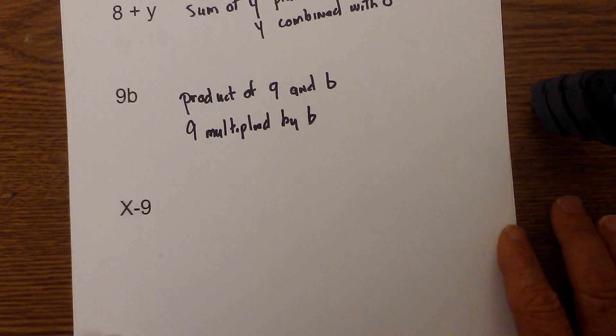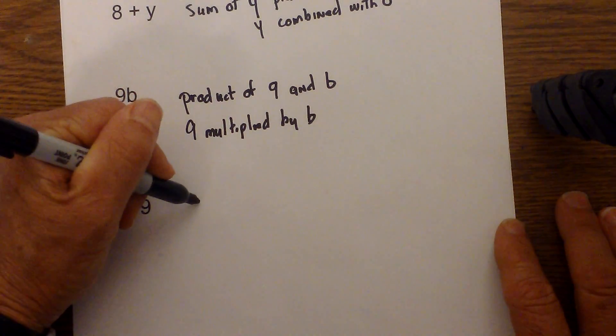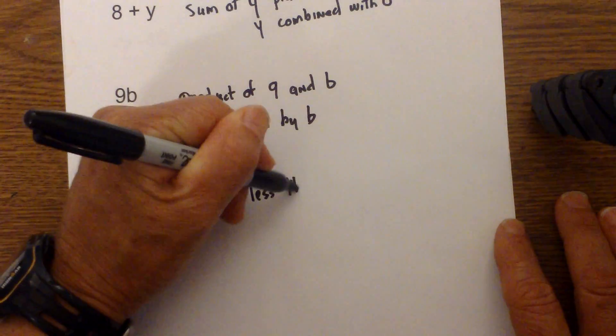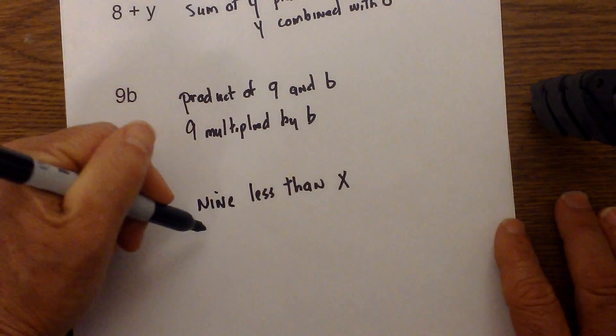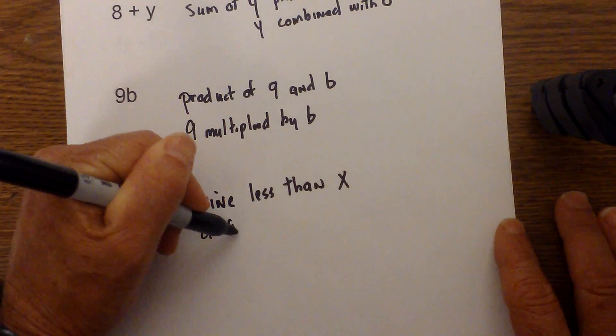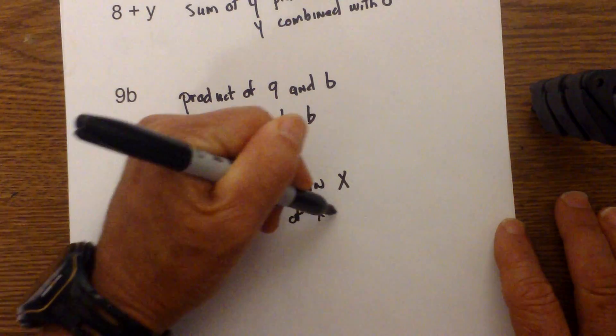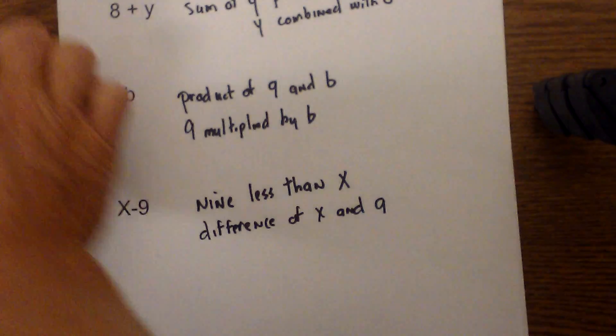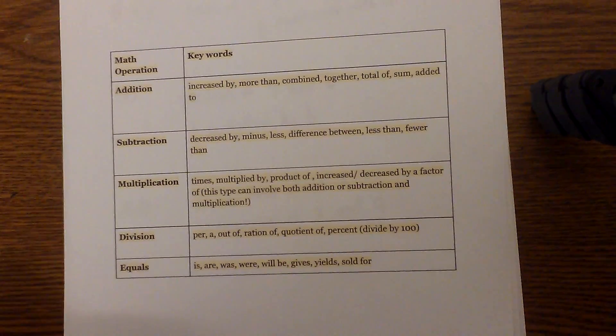Next we're going to move down to a subtraction problem. For that you can use 'difference'. I'll go with 9 less than x. Or if you don't like that, you could go 'difference', because 'difference' tells you subtraction. So 'difference of x and 9'.